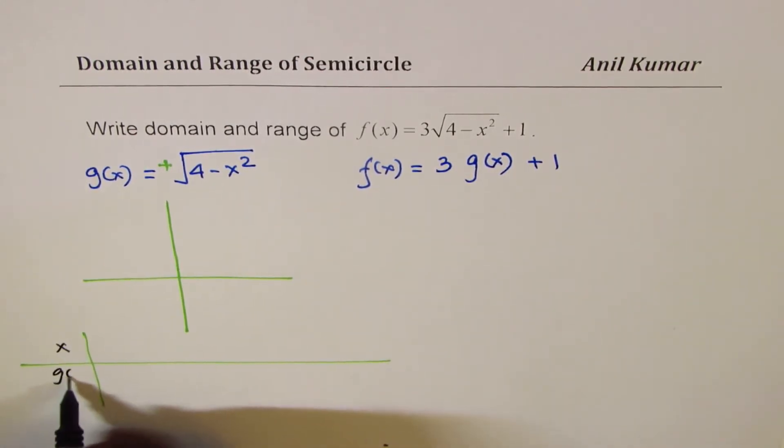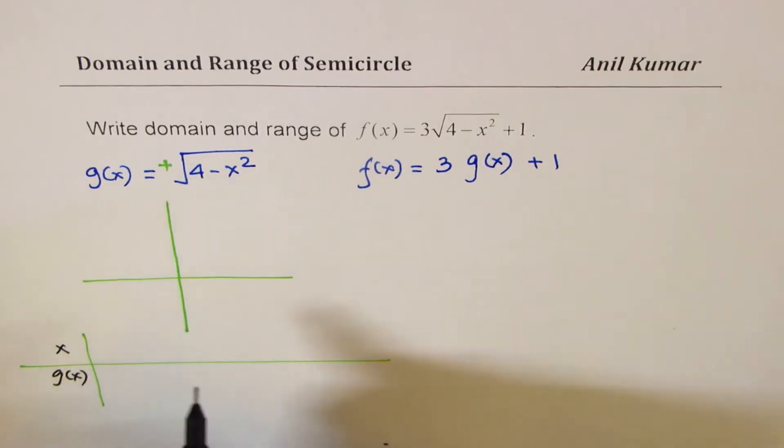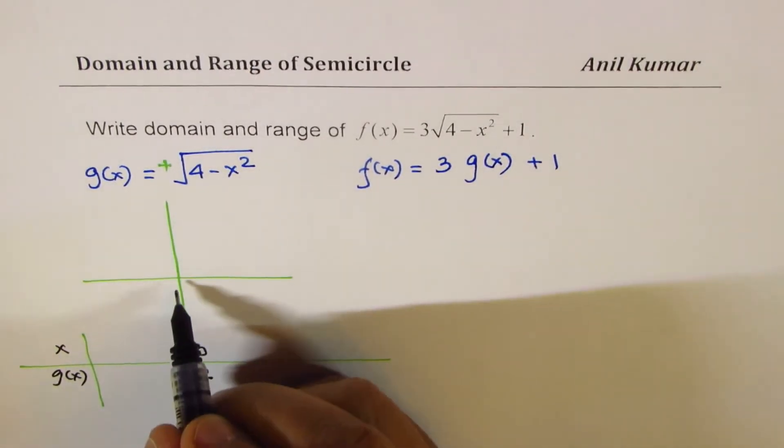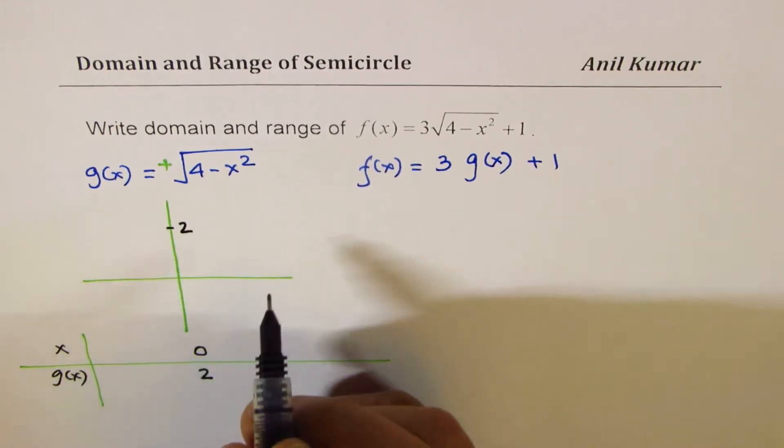So x and g(x). So if I take a value of x as 0, let us say, in that case I get 2, right? So at 0, I get a value 2. Let's say this is 2 for us.